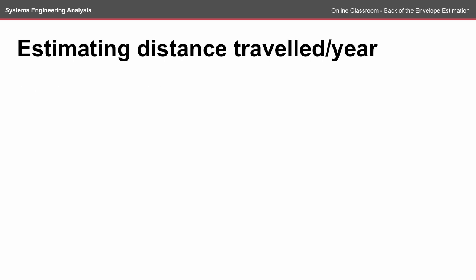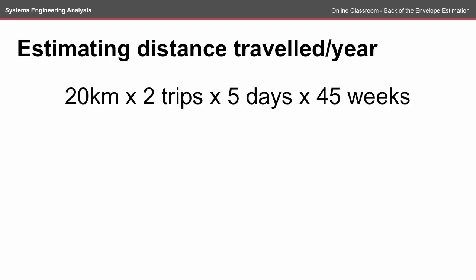To estimate the distance traveled per year, that's 20 kilometers times two trips a day, times five days a week, times 45 weeks a year. That comes out to 9,000 kilometers per year.